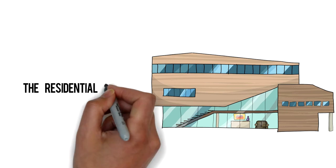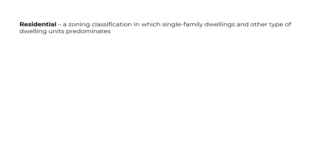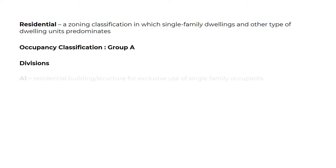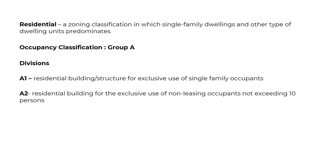Our lesson for today is all about the Residential Zone. Residential is a zoning classification in which single-family dwellings and other types of dwelling units predominate. The occupancy classification under the National Building Code is Group A. Division A1: residential building or structure for exclusive use of single-family occupants. A2: residential building for the exclusive use of non-leasing occupants, not exceeding 10 persons.